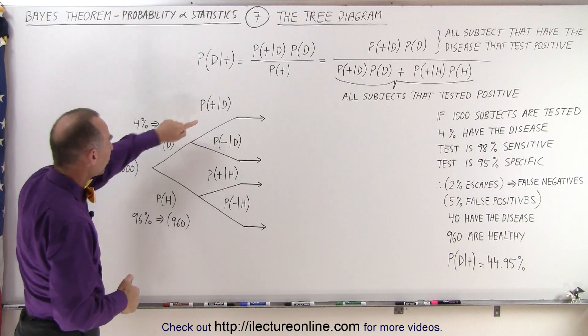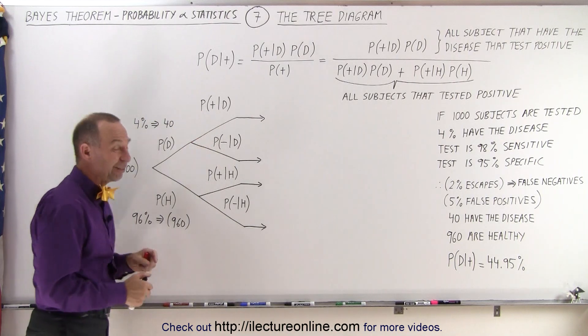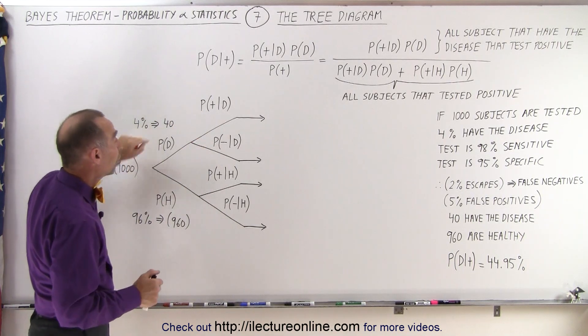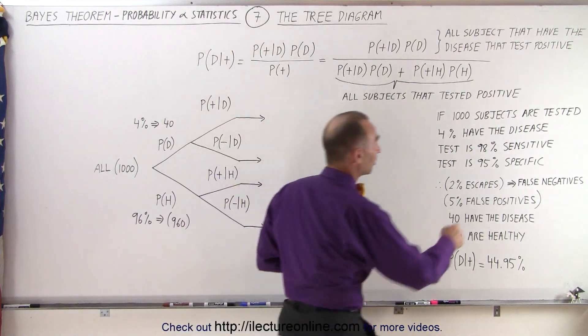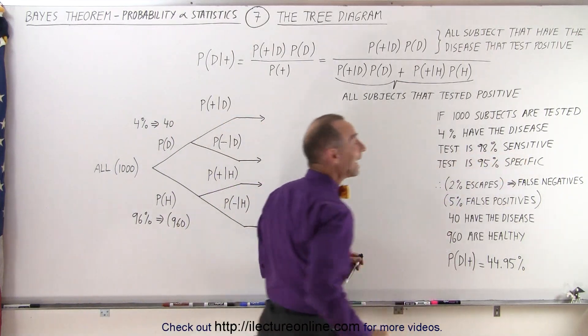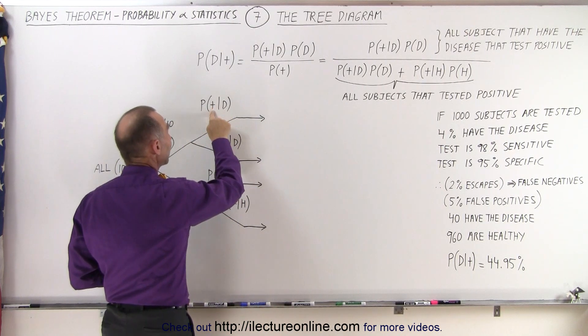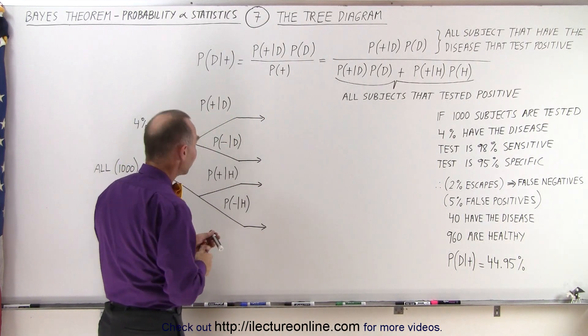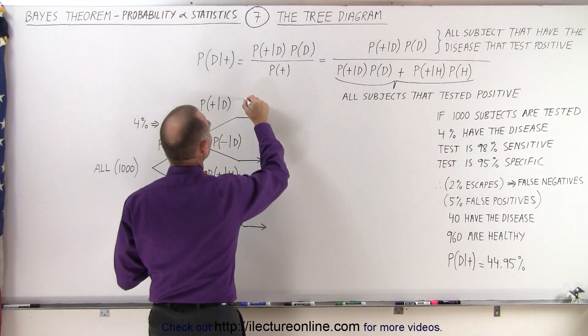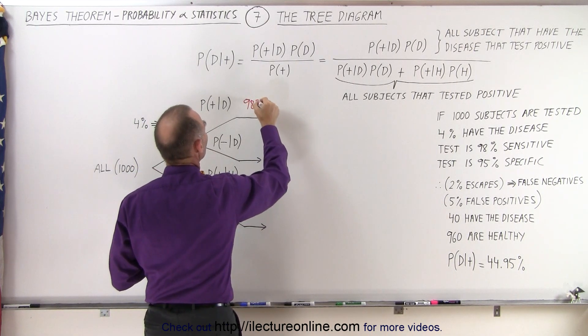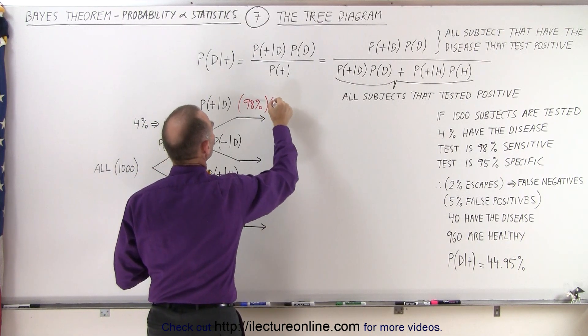Of those, some will test positive and some will test negative, of those that have the disease. So we look at the sensitivity of the test, and it says 98%, which means that of those, the ones that have the disease, 98% will test positive. So here we have 98%, and we're going to multiply that times 40, which gives us 39.2.